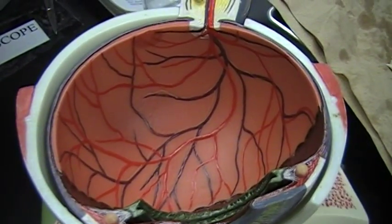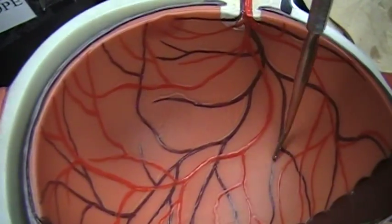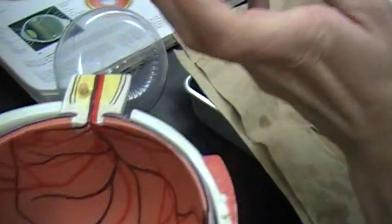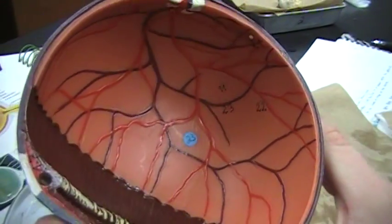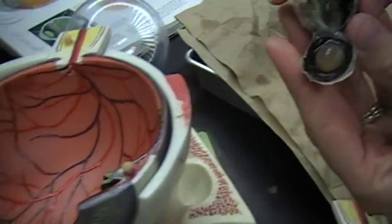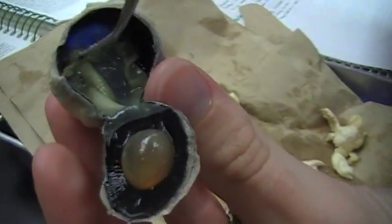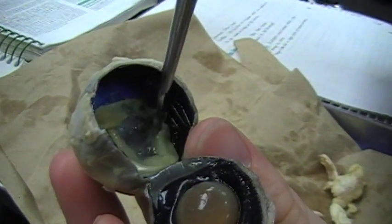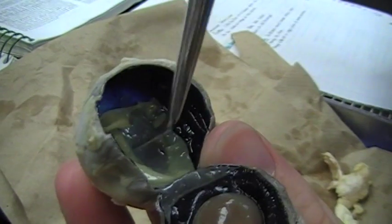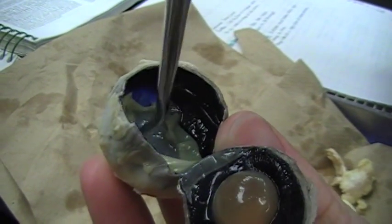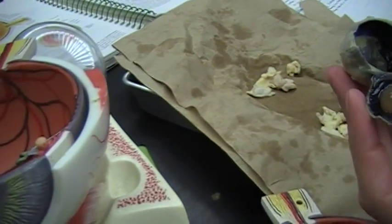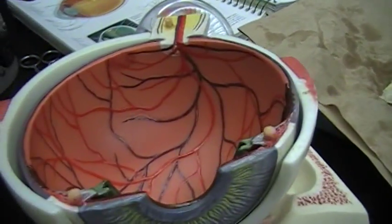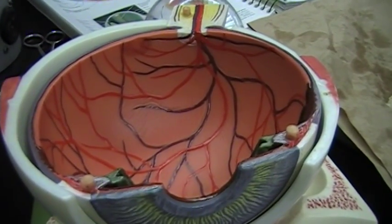And then next we have the retina. It is this right here, the orange substance. And here it is on the top of the eye, all this right here. It goes all the way around the back of the eye. And it is the innermost sensory layer. Here it is on the real eyeball, this folded up looking stuff right here. With the vitreous humor still intact, it would be pushed all the way against the eye. But the retina is like the film in a camera where the optics of the eye create an image on the retina and then send it through the optic nerve.